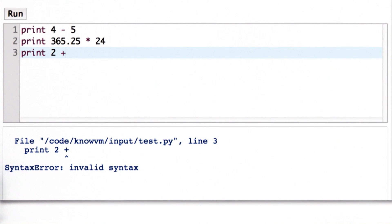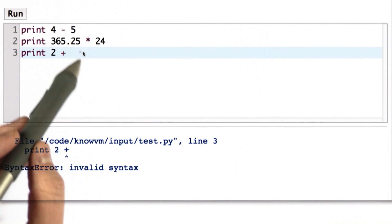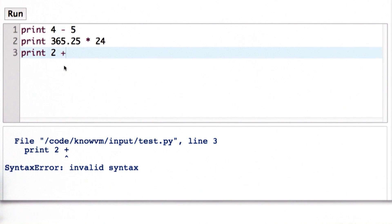In Python, the code must match the language grammar exactly. Here we saw when we tried to evaluate 2 plus without the extra operand, we got a syntax error. That means it's not grammatical.